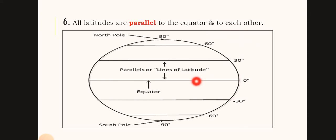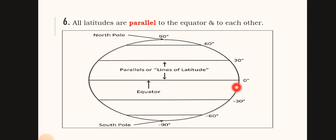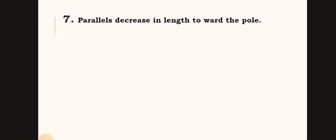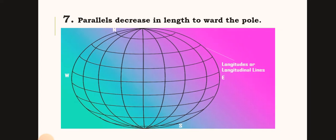Latitudes are horizontal lines, parallel to each other. Parallels decrease in length towards the pole — so as you move toward the pole, the length of the parallel lines decreases.